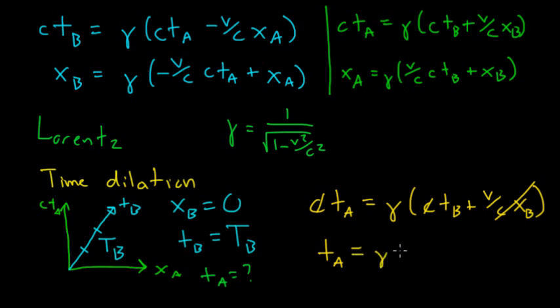So tA, the time that A measures for the ticking of their clock, is going to equal gamma TB. If this is measuring seconds then there's this factor gamma in front of here, and that gamma is equal to one over square root of one minus v squared over c squared, so that's one over one minus v squared over c squared times TB.